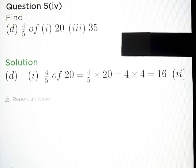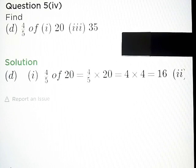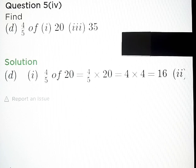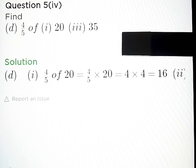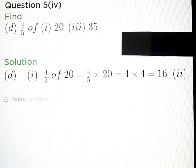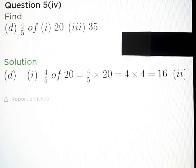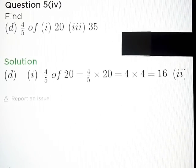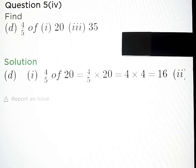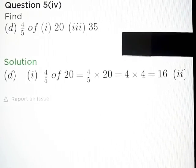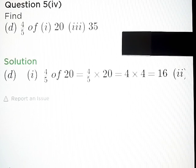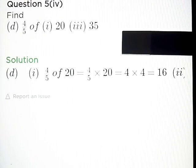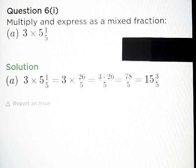Part D: Find 4 by 5 of 20 and 4 by 5 of 35. Answer: 4 by 5 of 20 is equal to 16, and 4 by 5 of 35 is equal to 28.